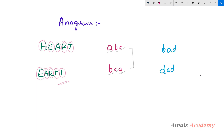Now if I take 'bad' and 'dad', these two strings are not anagrams because they contain different characters. 'bad' contains b, but 'dad' contains no b — it contains d instead. So these two strings are not anagrams.